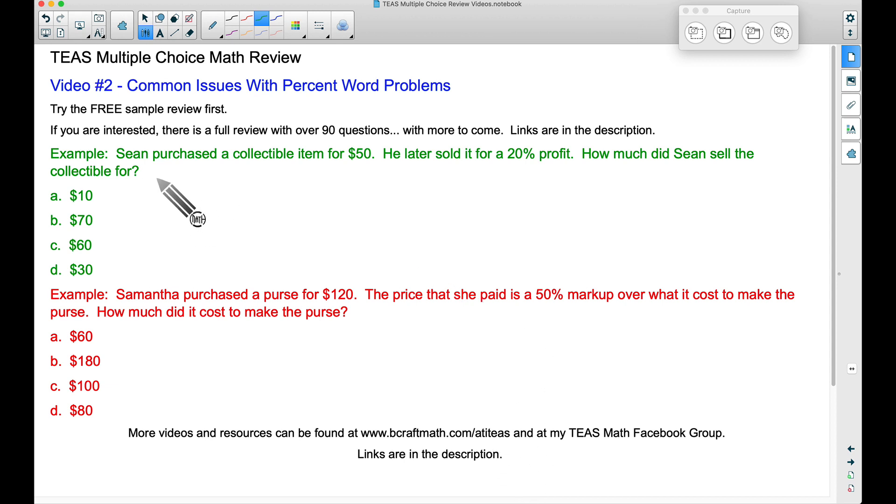But anyway on to this first example. Most people can get this one right but let's go ahead and look at it anyway. Sean purchased a collectible item for $50, he later sold it for a 20% profit. How much did Sean sell the collectible for? Now let's be careful here, it does ask how much did Sean sell the collectible for?